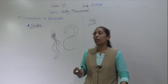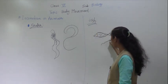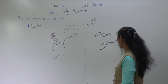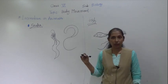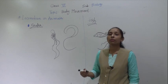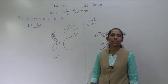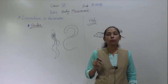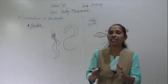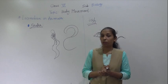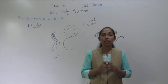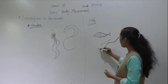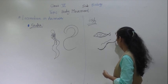The fish shows movement by making a wave-like motion sideways, and also with the help of strong muscles present in the body. This wave-like motion sideways is possible because of the strong muscles connected to the backbone. The fish makes different wave-like structures on its body.